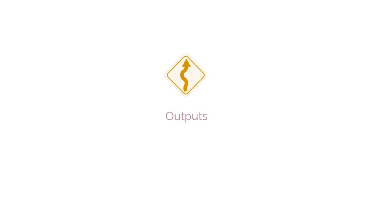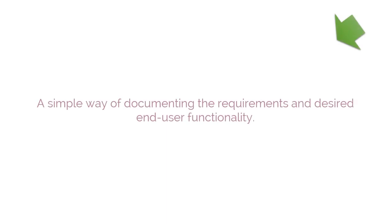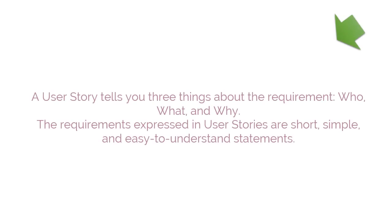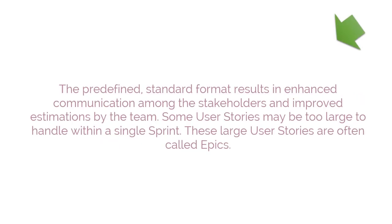The mandatory outputs of this process are user stories and user story acceptance criteria. User stories are a simple way of documenting the requirements and desired end-user functionality. A user story tells you three things about the requirements: who, what, and why. The requirements expressed in user stories are short, simple, and easy to understand statements. The predefined standard format results in enhanced communication among the stakeholders and improved estimations by the team.